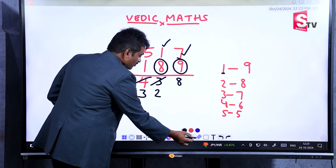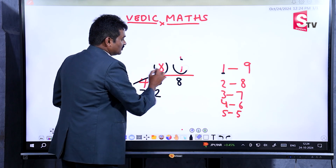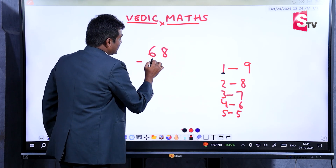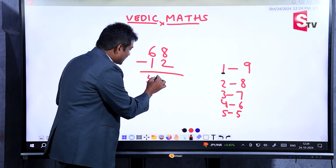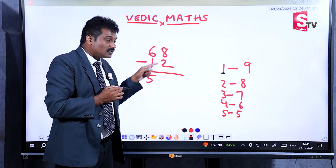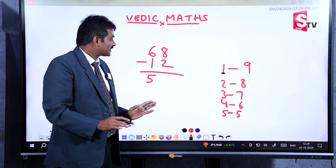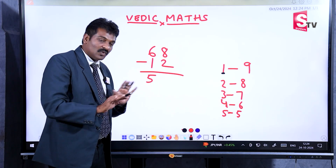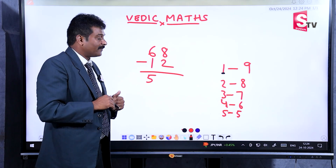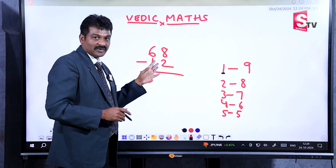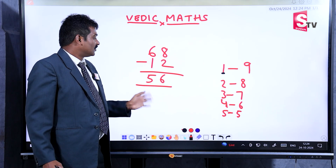Let me show one more example for when subtraction is possible. Suppose the problem is 68 minus 12. 6 minus 1 is 5. Now, 8 minus 2 — is it possible to subtract? Yes, it is possible. In this case, no need to cut the number. Whenever it is not possible, that time only you cut the number. Here, 8 minus 2 is 6. Your answer is 56.